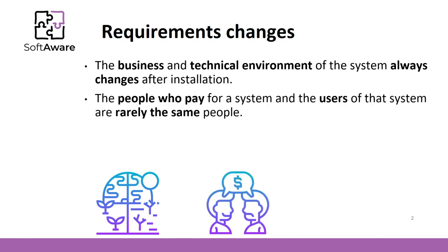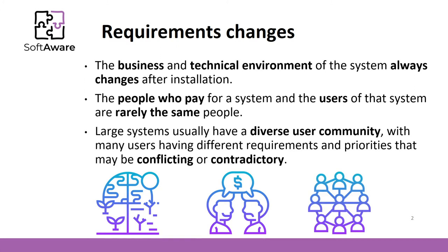By the way, users and clients that pay for a system usually are not the same people. Clients may impose some requirements because of organizational and budgetary constraints, while these requirements may conflict with end-user requirements. That's why, after delivery, new features may have to be added for user support. Large systems usually have a diverse user community, and various users may have different requirements or priorities that may be conflicting or contradictory. The final system requirements are some sort of compromise between them. Actually, this is a common case in real life.